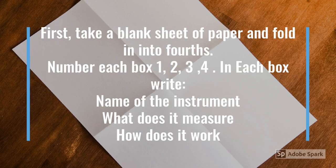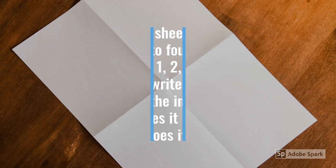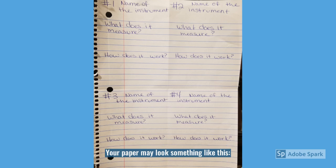First, take a blank sheet of paper and fold it into fourths. Number each box 1, 2, 3, and 4. In each box, write the name of the instrument, what it measures, and how do you predict that it would work. Your paper may look something like this once you have it prepared.